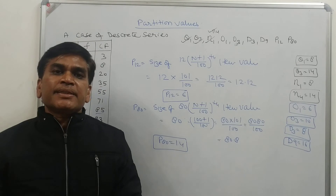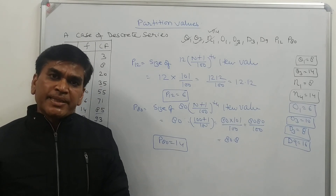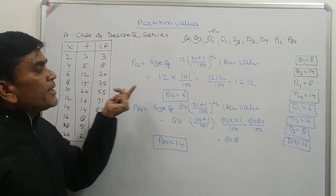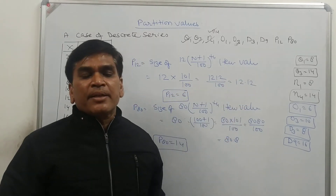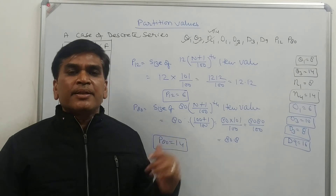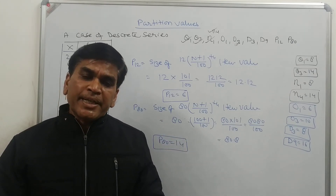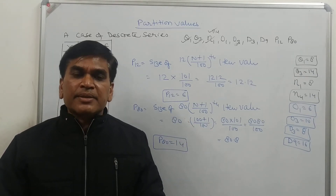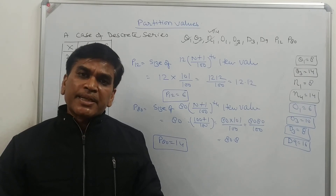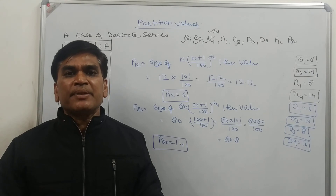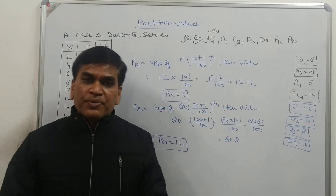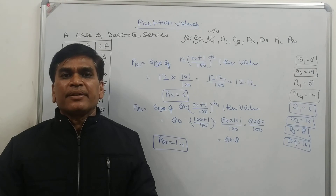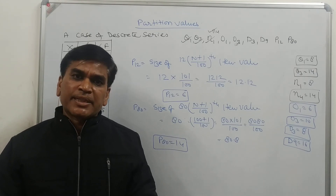In discrete series, calculating the partition value is quite easy compared to individual series. We just calculate the item position using the formula, then check in cumulative frequency where that item first falls — the value at that point is the answer. If you feel any difficulty, watch this video again. I believe if you see this video twice, you will know how to calculate the partition value in discrete series. You can ask me in the comment box — I will try my best to answer and satisfy you. Thank you.